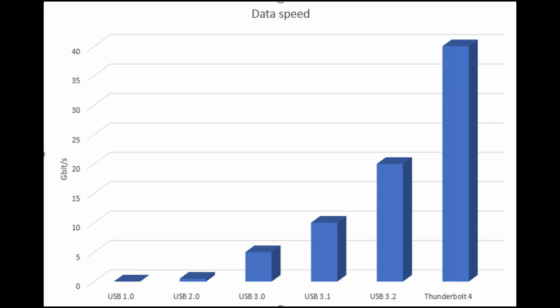What is Thunderbolt 4? As previously mentioned, Thunderbolt is designed by Intel and Apple. It was first introduced in 2011 using the mini DisplayPort connector, and the current Thunderbolt 4 uses the USB-C connector. Thunderbolt 4 can support dual 4K displays and has amazing transfer speeds of 40 gigabytes per second. It is twice as fast as the 20 gigabytes per second for USB 3.2, four times as fast as the 10 gigabytes per second for USB 3.1, eight times as fast as the 5 gigabytes per second for USB 3.0, and more than 80 times faster than the 480 megabytes per second for USB 2.0.